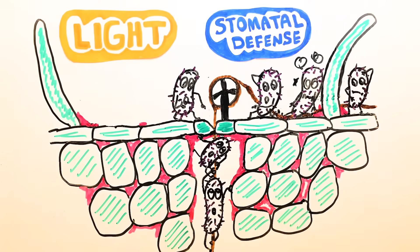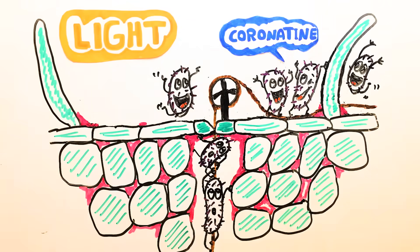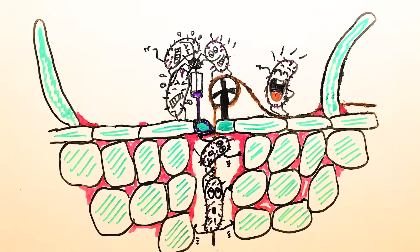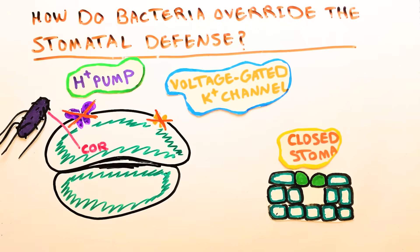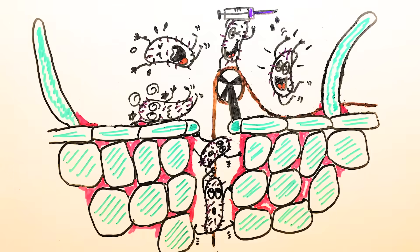Despite this smart defense of the plant, sometimes the bacteria can figure it out and open up the stomatal pore again — they are good problem solvers. One of their solutions is coronatine. Some bacteria can inject coronatine into the guard cells; upon injection, coronatine resembles jasmonic acid, a plant hormone involved in stomatal opening. Therefore coronatine can reactivate the proton pump on the guard cell membrane, leading to flow of water into the cells and reopening the stomatal pore.